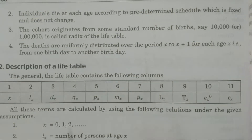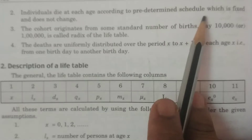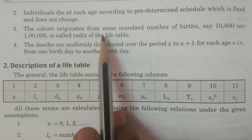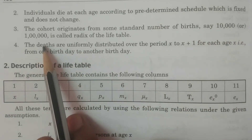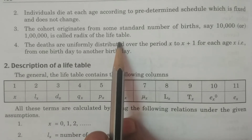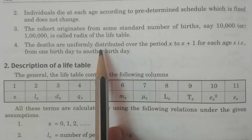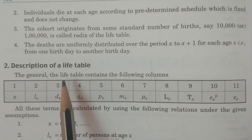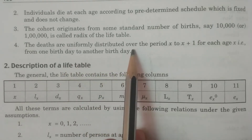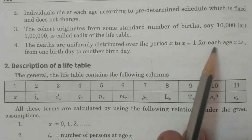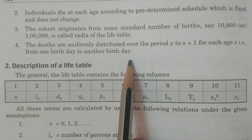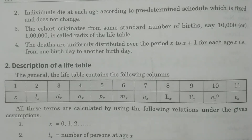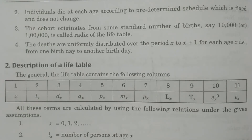The individuals die at each age according to a predetermined schedule, which is fixed and does not change. The cohort originates from some standard number of births, say 10,000 or 1 lakh — also called the cohort or radix. It is the initial population we consider, usually taken as 10,000 or 1 lakh. The fourth assumption: deaths are uniformly distributed over the period within a particular year. Based on these assumptions, we construct a life table.